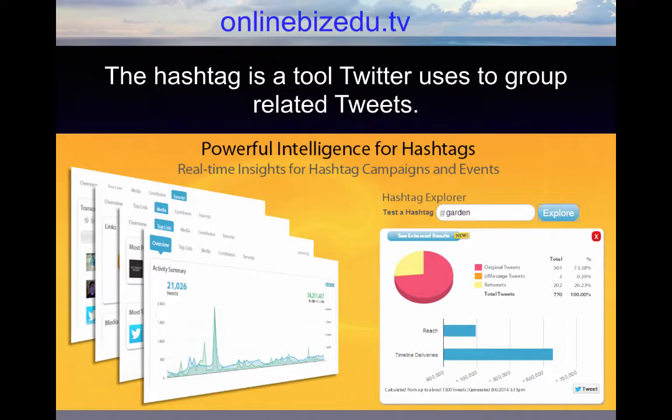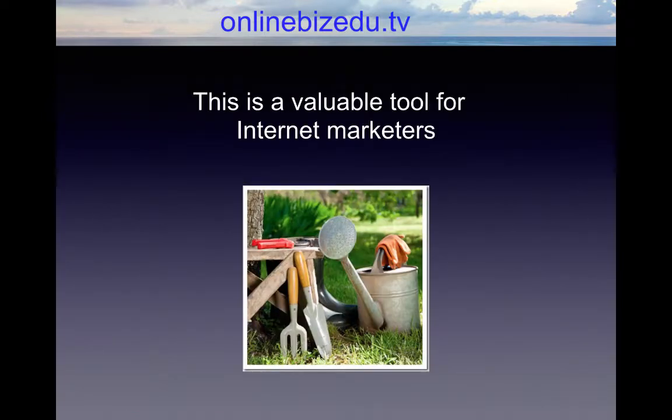The hashtag is a tool that Twitter uses to group related tweets. For example, if you are interested in NASCAR racing and want to find the latest tweets about that sport, you can simply search for hashtag NASCAR and you will instantly gain access to every tweet that featured this hashtag, regardless of whether you are following the people who posted them or not. This is a valuable tool for internet marketers because it makes it easy to find people who potentially would be interested in the niche you work in or specific products and services you are promoting.